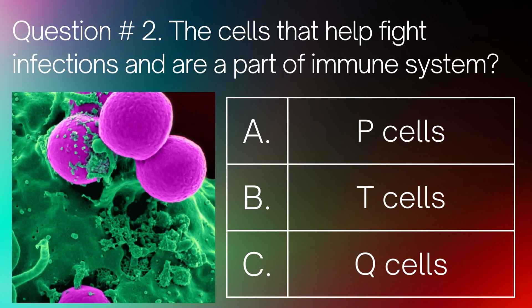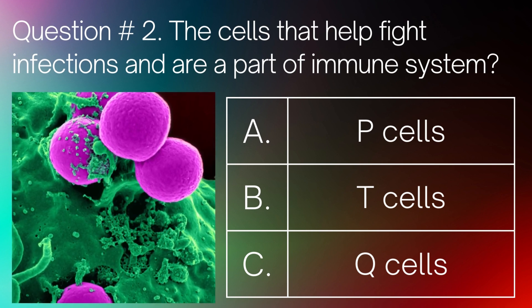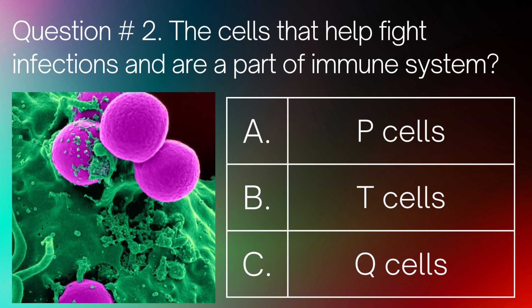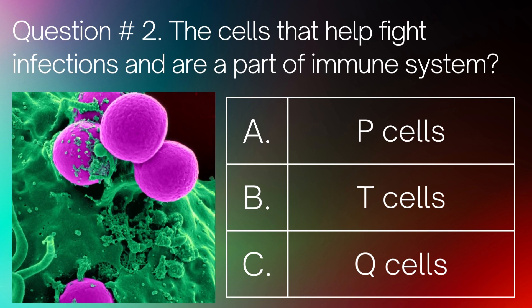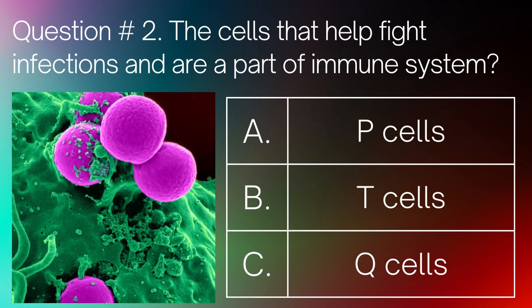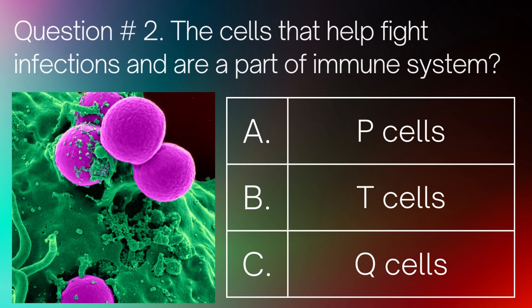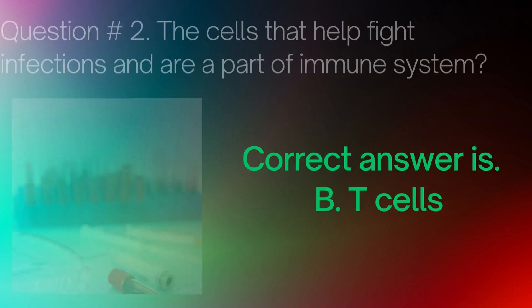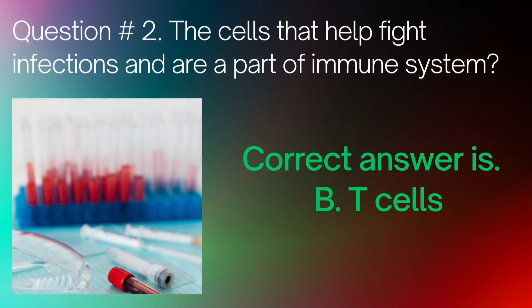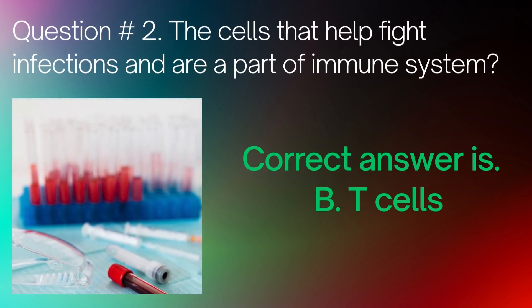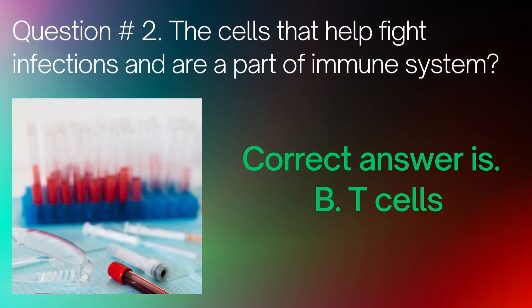Question number 2. The cells that help fight infections and are a part of the immune system? A. P cells. B. T cells. C. IQ cells. Correct answer is B. T cells.